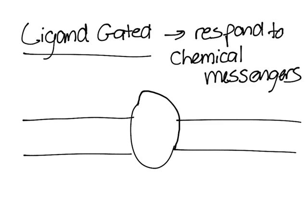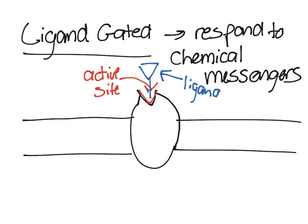What that means is there will be a place here. This right here is the active site in which a ligand will come and bind there. The ligand is a chemical messenger. It'll bind to the channel and then open it up. After it binds, the ion channel opens up, and then, for example, sodium can diffuse down here.